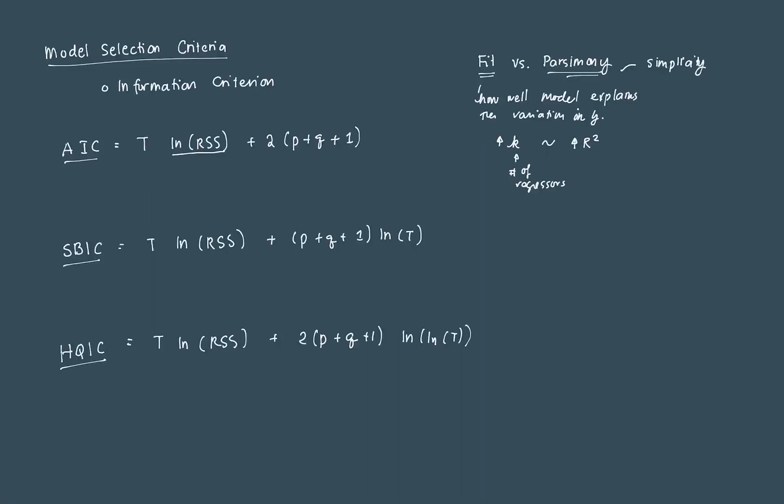If the fit of the model is better, what happens is that RSS typically goes down. It will go down because there's less of the model that you do not have explained. And thus, if the fit is better, this part here will generally decrease. And we call this one the fit penalty. If the fit of the model increases, this part here should decrease.